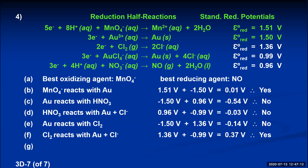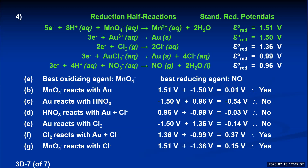The final part: will permanganate oxidize chloride ions? Translating: will permanganate react with chloride? Permanganate is in the top reaction already on the reactant side — reduction potential 1.51. Chloride ions are in the third reaction on the product side, so reverse that reaction to get chlorides on the reactant side — potential changes to negative 1.36. Adding 1.51 and negative 1.36 gives a positive voltage, so permanganate will oxidize chloride ions — this is a spontaneous reaction.